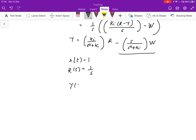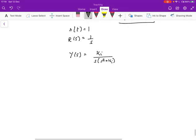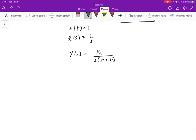And then Y(S) is therefore going to be KI/(S(S² + KI)). And if you expand that out, this can be written as 1/S using partial fractions minus S/(S² + KI). And then taking the inverse Laplace transform, Y(t) is going to be given by 1 minus cos(√KI·t).